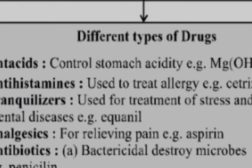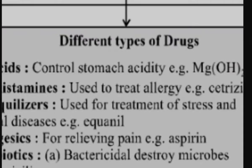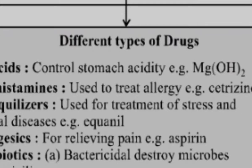Second: antihistamines are used to treat allergy, like cetirizine. Drugs used to treat allergy occurring in our body are called antihistamines, and one example is cetirizine. Next: tranquilizers are used to treat stress and mental diseases, like equanil. Drugs that treat stress or mental/mind-related diseases are called tranquilizers, like equanil.